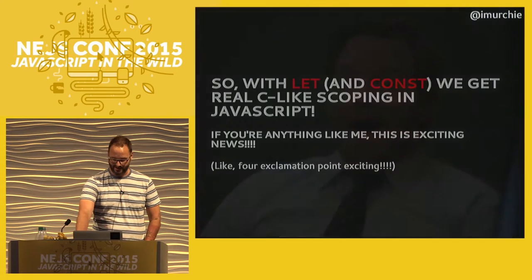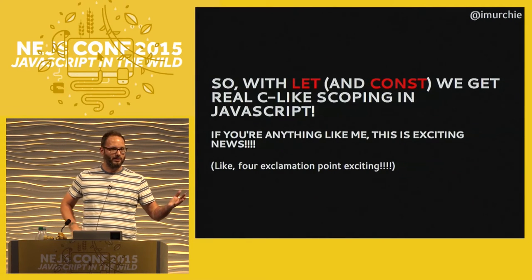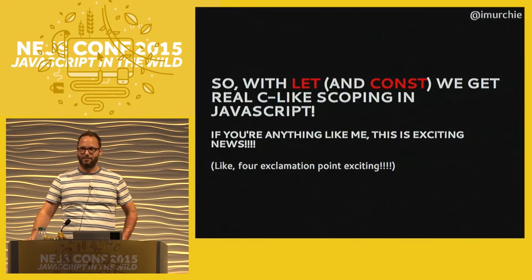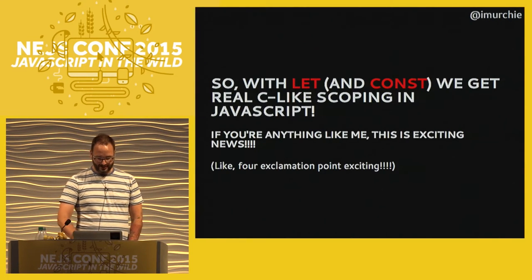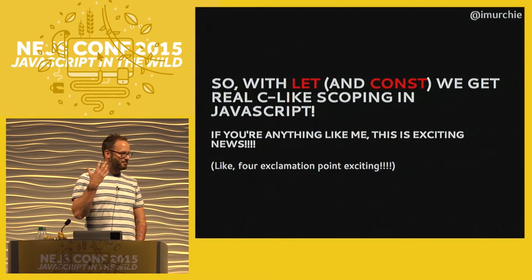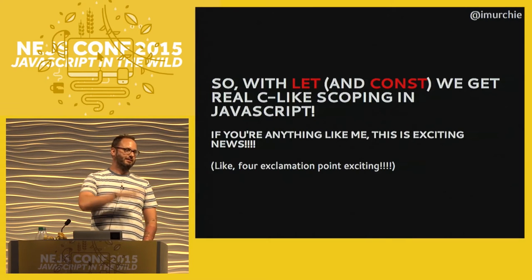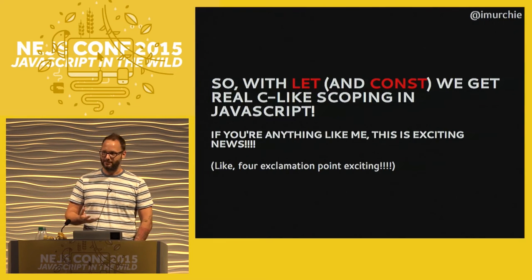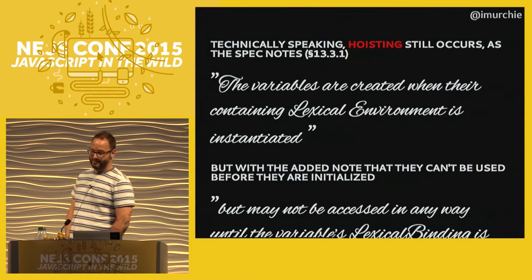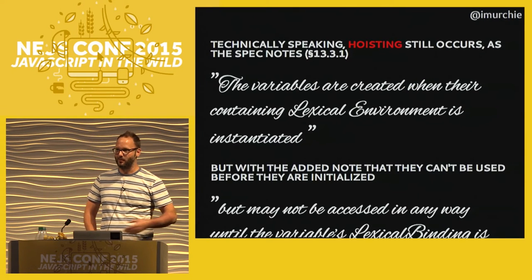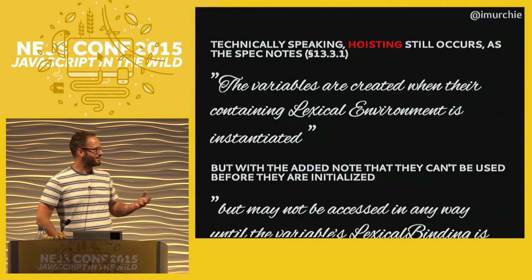With `let` and `const` we get real C-like scoping — scoping that follows rules from nominally parental languages. This makes code more terse but more descriptive at the same time; it follows how you read it. Almost all descriptions of `let` and `const` on the web do away with hoisting, but hoisting is still there and it's important that it's still there.